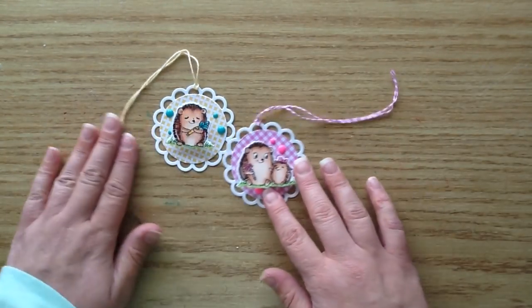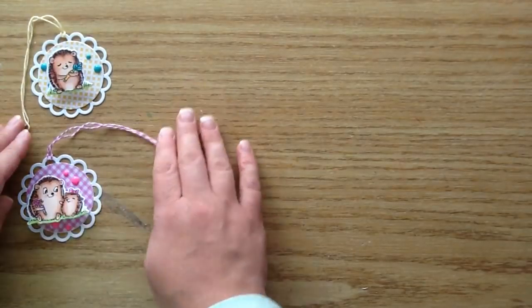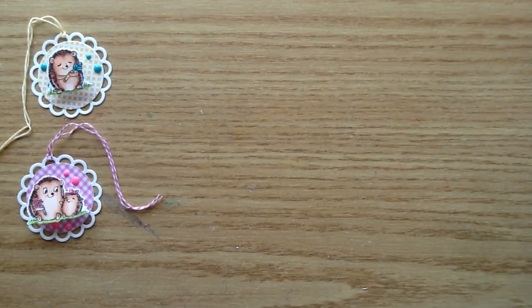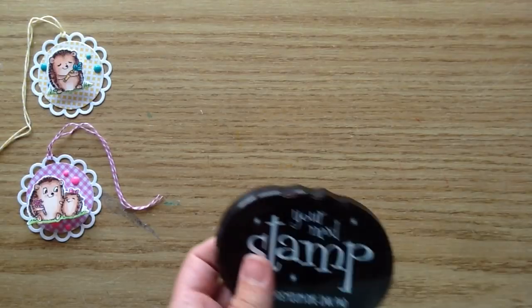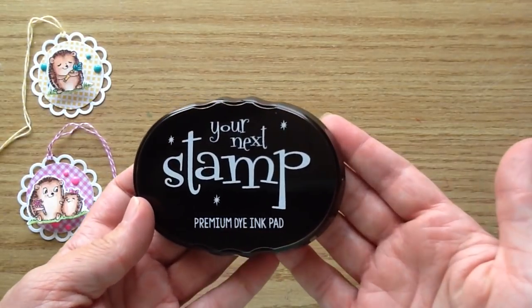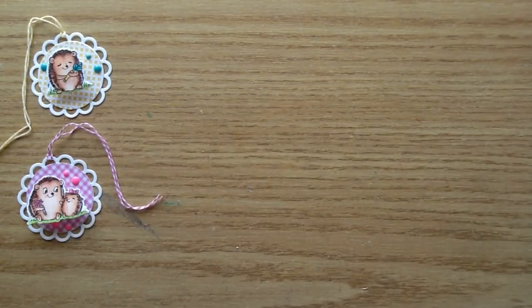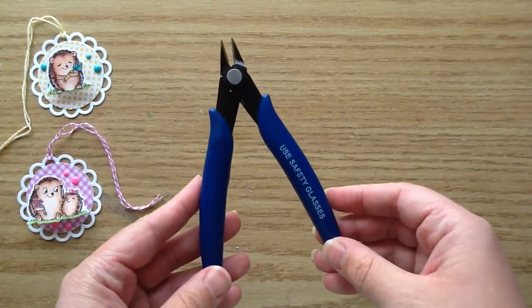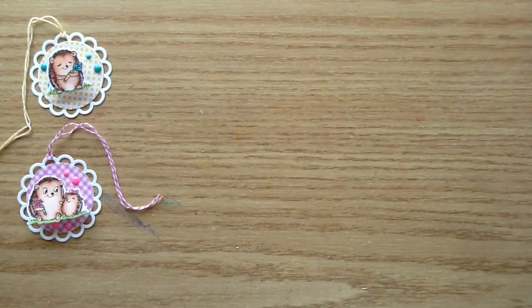So I'm going to share with you the products I use to make my little tags. I'll link them all in the description box for you so you can find them over in the Your Next Stamp store. First of all I use the Your Next Stamp black olive ink. It is my favorite ink ever and I also use the Your Next Stamp wire trimmers for trimming apart the dies.